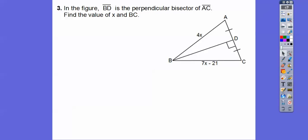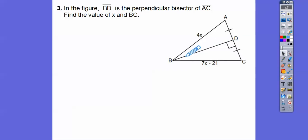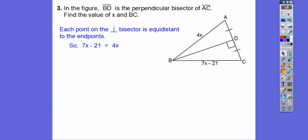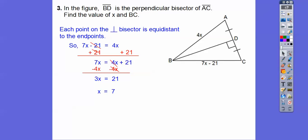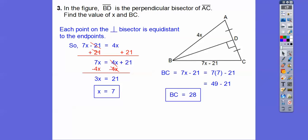In the figure, BD is the perpendicular bisector of AC. If it's the perpendicular bisector, that means this point is equidistant to both endpoints, and any point on this perpendicular bisector. B is equidistant to C and A. So I'm going to set 7X minus 21 equal to 4X. Adding 21 and subtracting 4X, then dividing by 3, we get X equals 7. But we're not done — it also says find the value of BC. Plugging in 7: 7 times 7 is 49, and 49 minus 21 is 28. So the two answers are X equals 7 and BC equals 28.